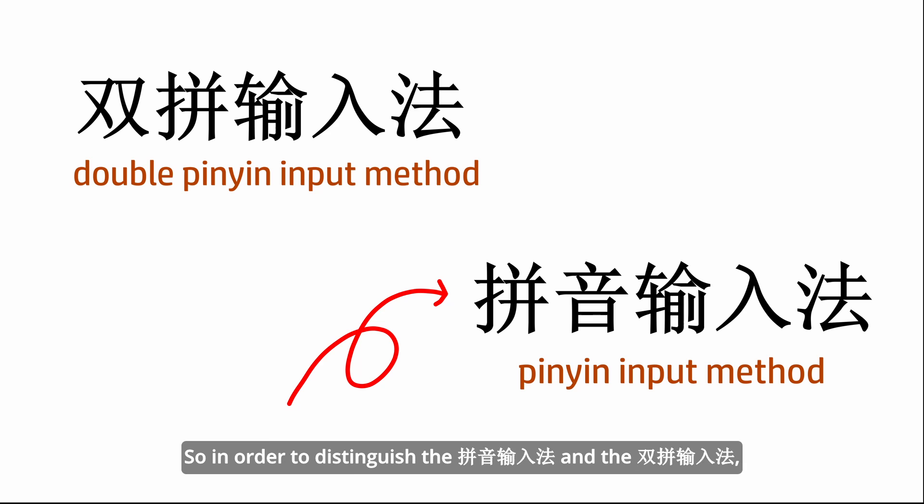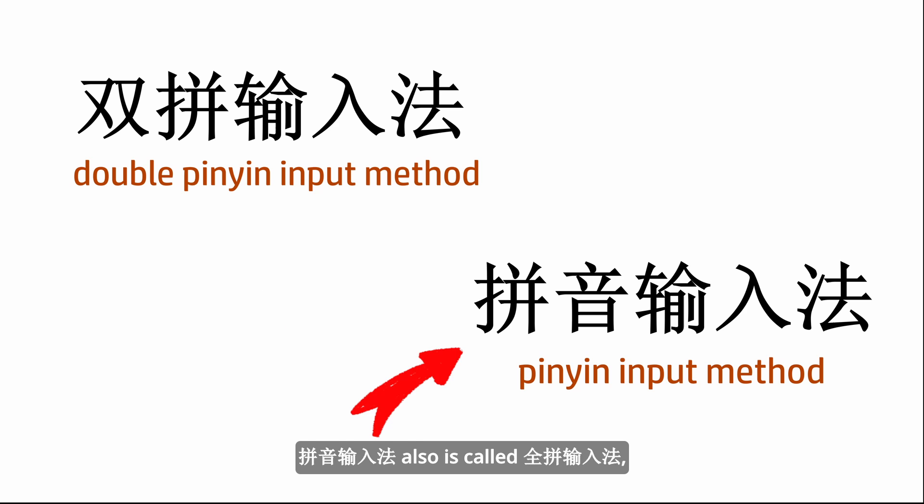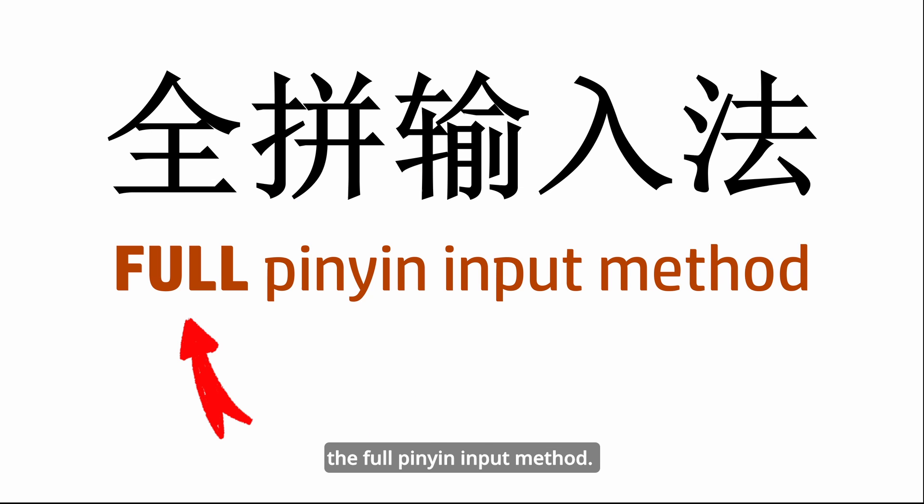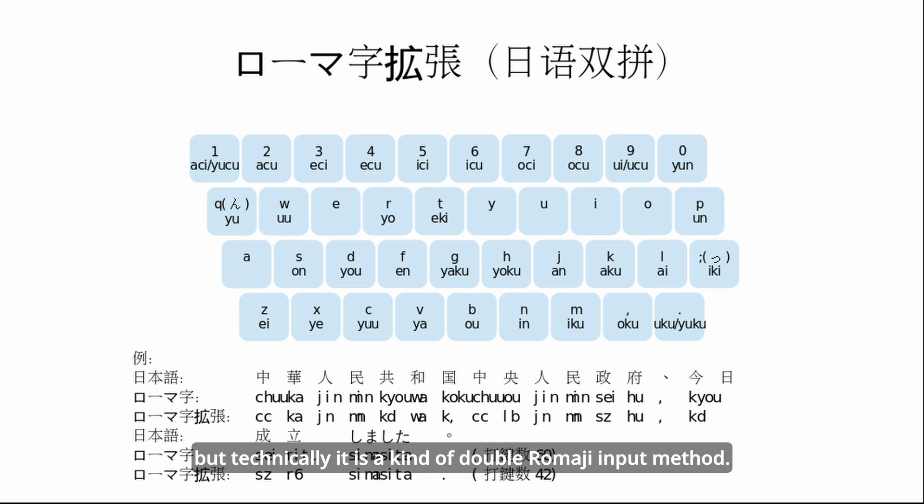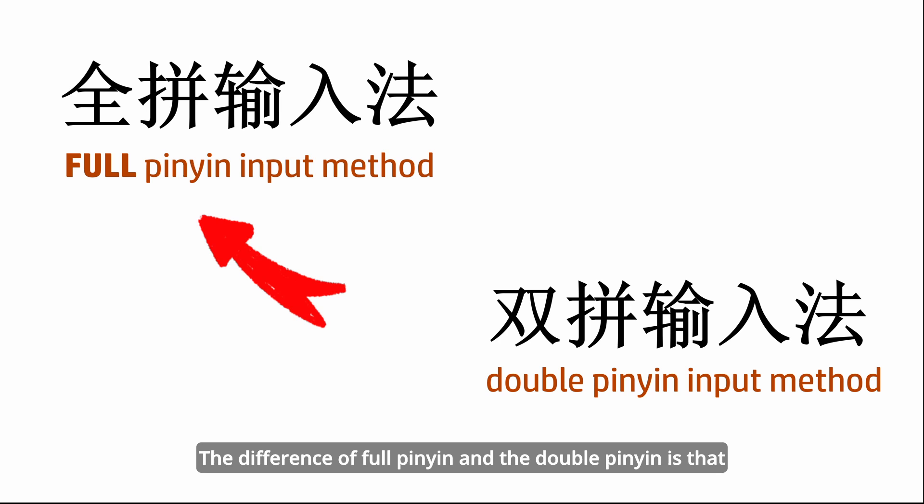So in order to distinguish the pinyin shu rufa and the shuang pin shu rufa, pinyin shu rufa is also called quan pin shu rufa, the full pinyin input method. By the way, the Japanese language also has its own double pinyin input method, but technically it is a kind of double romaji input method.